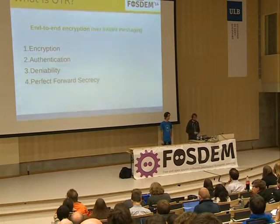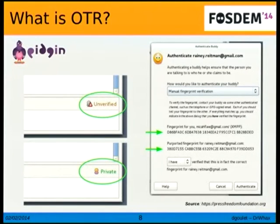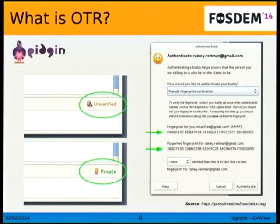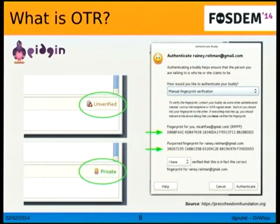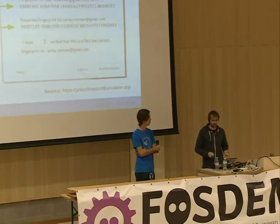Some of you may use Pidgin — this is an example of the Pidgin OTR plugin maintained by Ian Goldberg, the guy who maintains libotr. So you get this unverified and private status. Unverified means you've started a chat but you don't know if you're talking to that person — you're encrypted but not verified. At some point you do a verification of fingerprints, which is a tedious and not very user-friendly process, and then you get to private, meaning encrypted and verified.